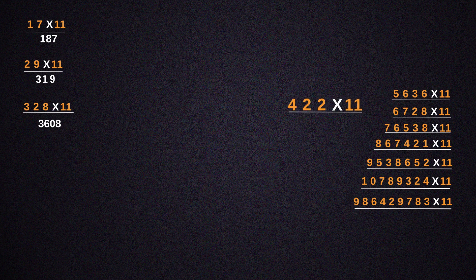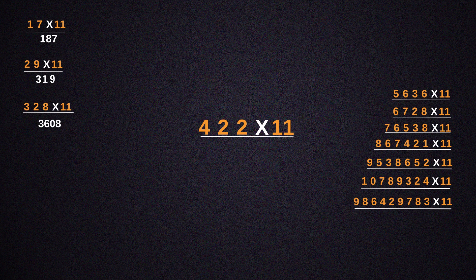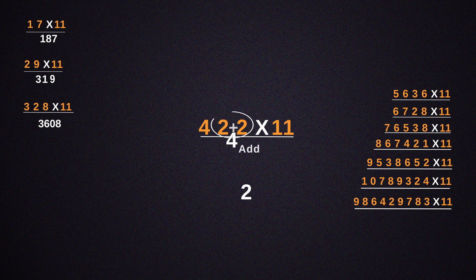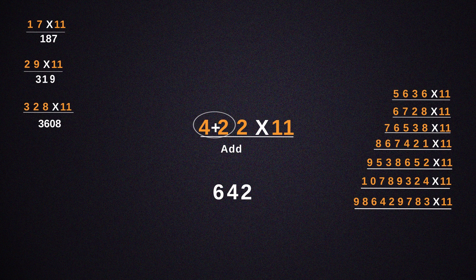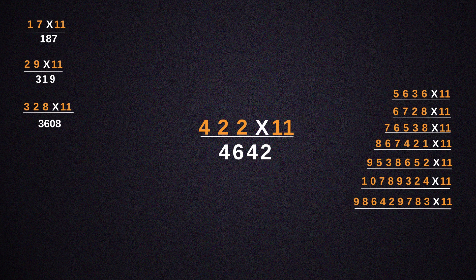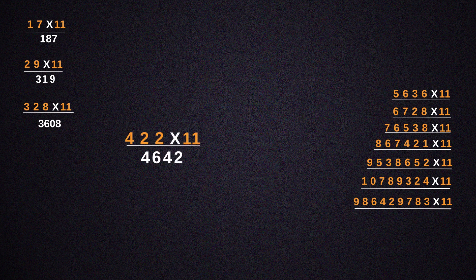Here, in 422 being multiplied, 1 by 2 is being multiplied, giving us 2. Then take the sum of 2 and 2, giving us 4. And take the sum of 4 and 2, to give us 6. Write 4 as it is — this procedure will give us the answer of 4,642.